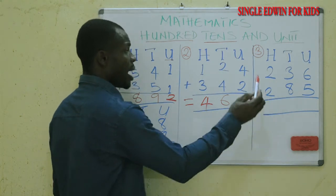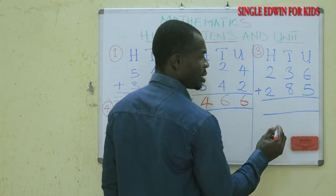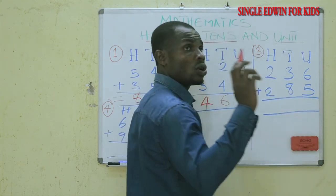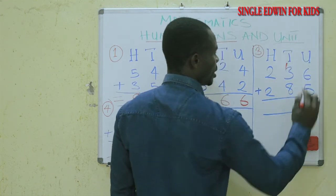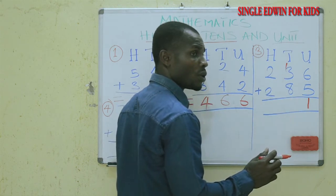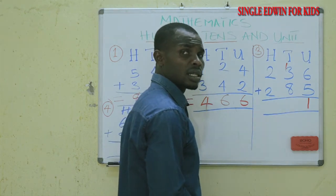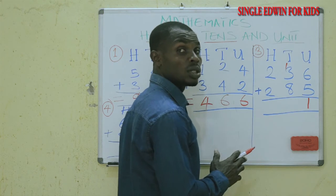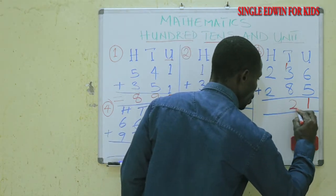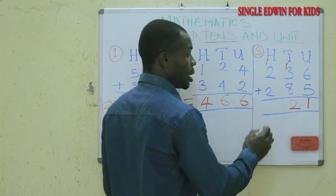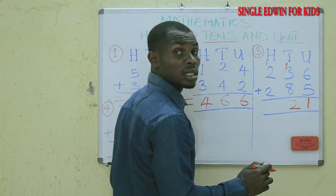We go to number three. We start from the unit: six plus five is eleven. We are not going to write eleven — we write one and carry one to the tens place. Then one plus three is four, and four plus four is eight. But four plus eight is twelve, so we write two and carry one to the hundreds place.